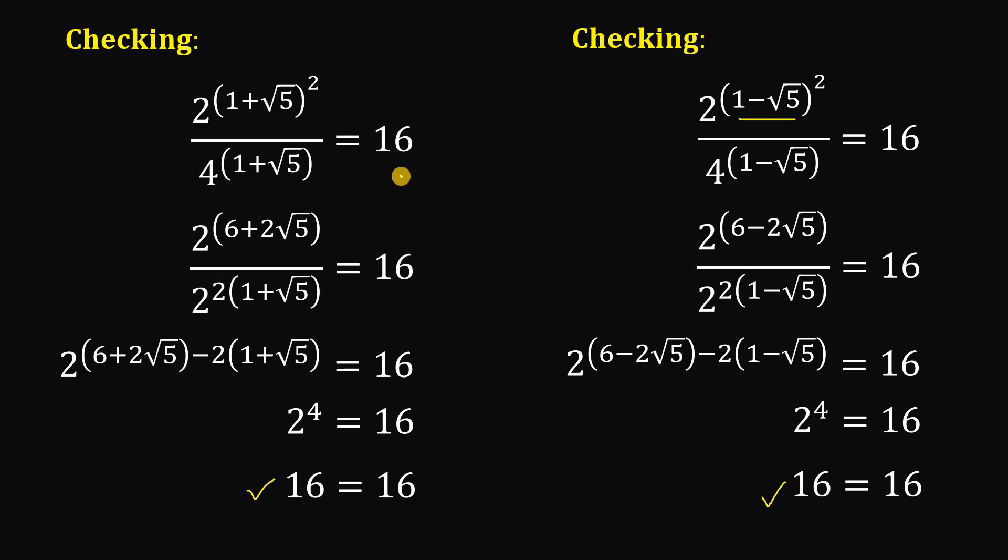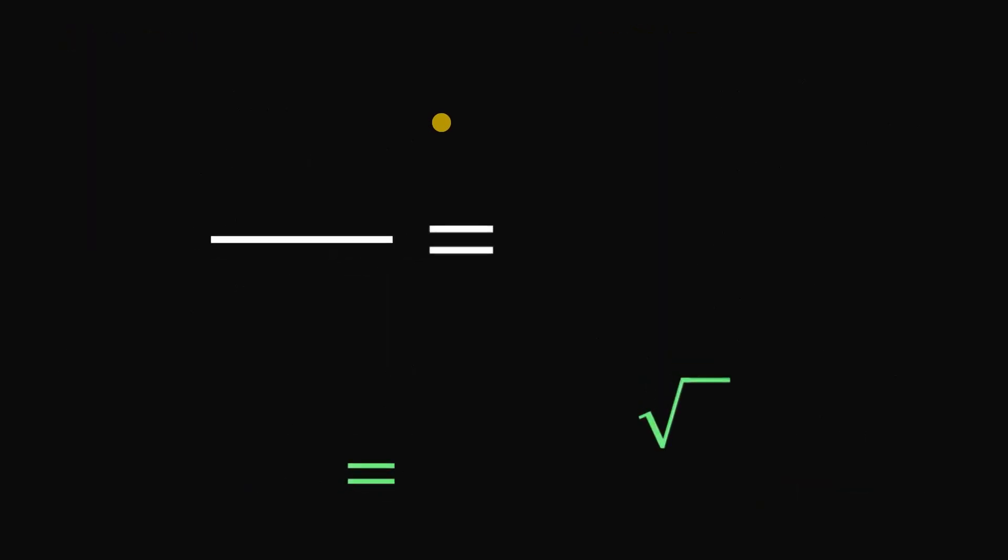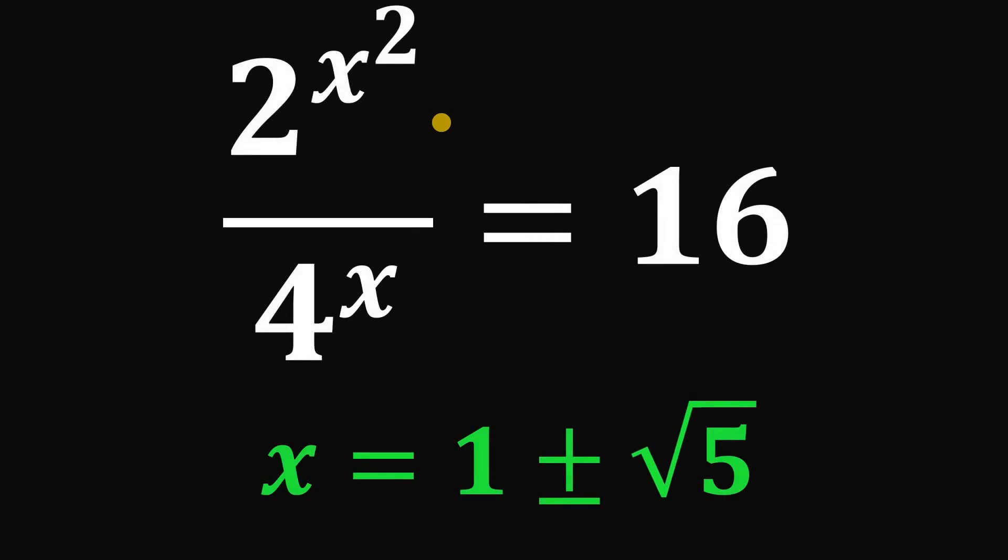Meaning both values of x, 1 plus square root of 5 and 1 minus square root of 5 are the values of x. And those values satisfy this equation. And as always, we are done.